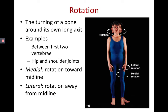Then there's rotation, which isn't necessarily an angular movement and is only possible in a few places: between the first two vertebrae C1 and C2, and to some extent at the hip and shoulder joints. Moving your head left and right is an example of rotation. You have both medial rotation, toward the midline, and lateral rotation, away from the midline.